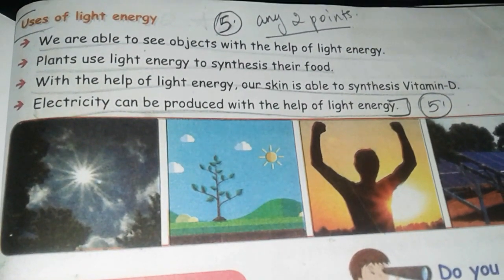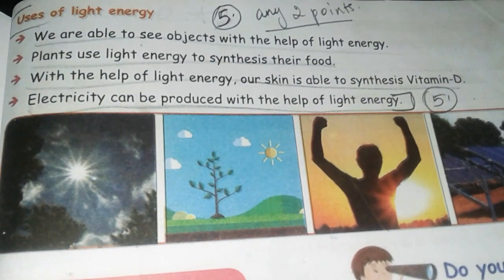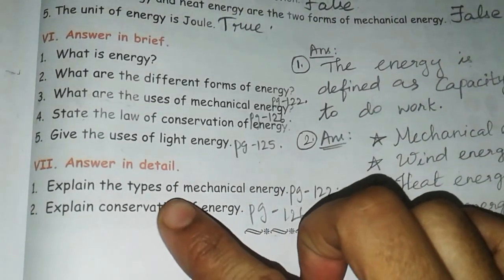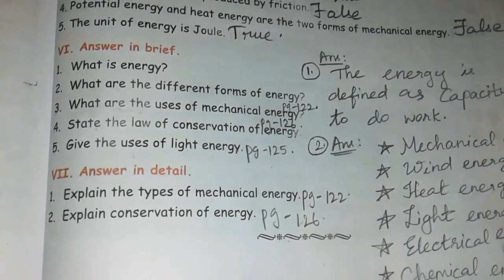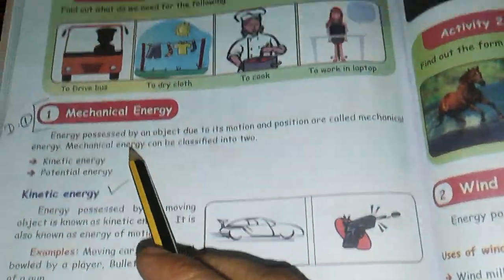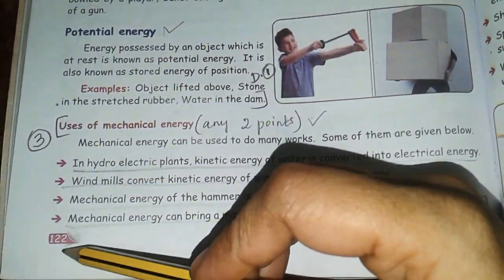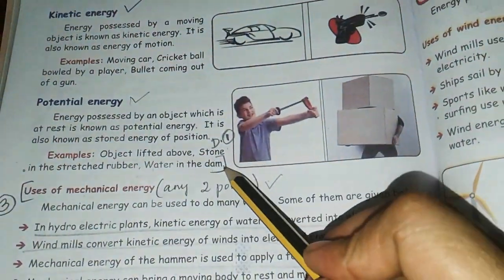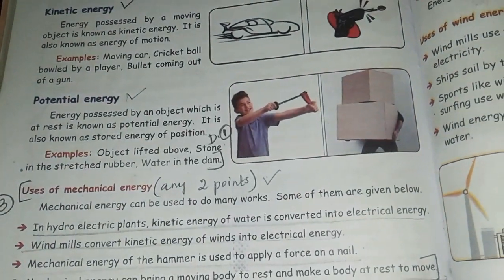Next one: explain in detail the types of mechanical energy. Page number 122. So the mechanical energy section and its working - water in the dam - uses of mechanical energy are covered there.